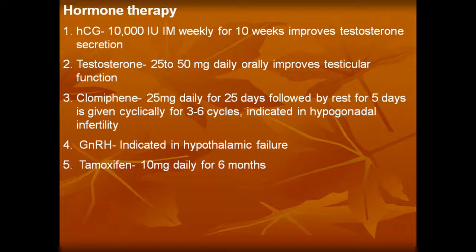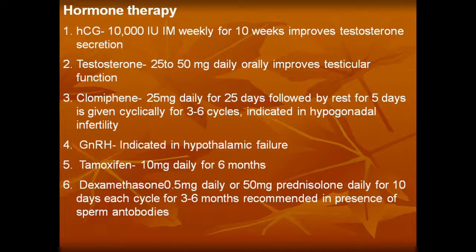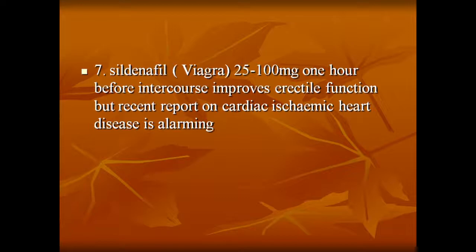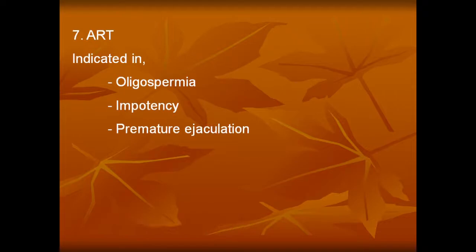Tamoxifen 10 mg daily for 6 months. Dexamethasone 0.5 mg daily or 50 mg of prednisolone daily for 10 days each cycle for 3 to 6 months, recommended in the presence of sperm antibodies. Sildenafil (Viagra) 25 to 100 mg one hour before intercourse improves erectile function, but recent reports on cardiac ischemic heart disease are alarming. Finally, assisted reproductive techniques are indicated in oligospermia, impotency, premature ejaculation, hypospadias, and anti-sperm antibodies in cervical mucus, and unexplained infertility.